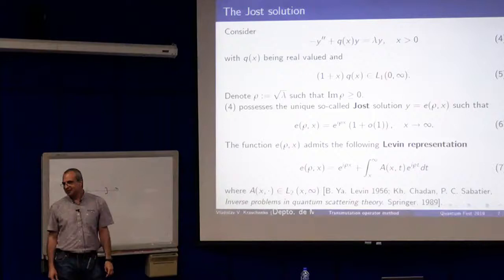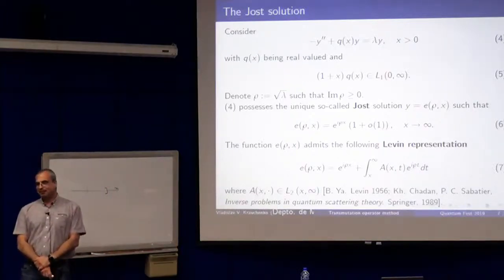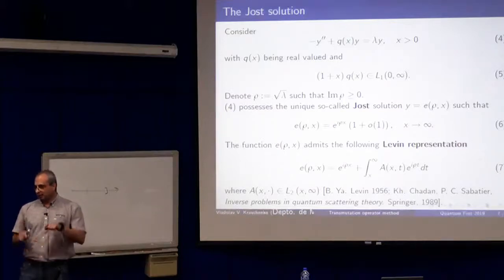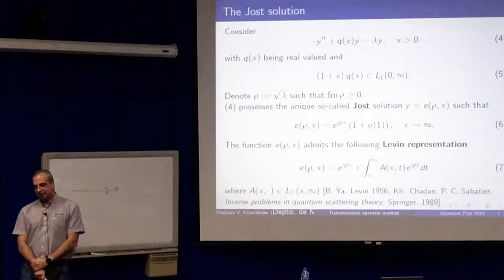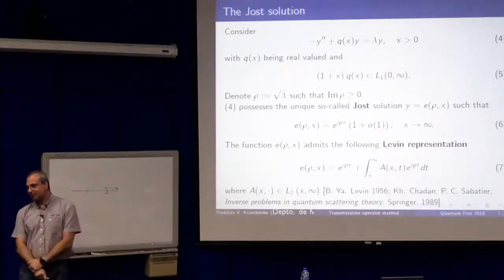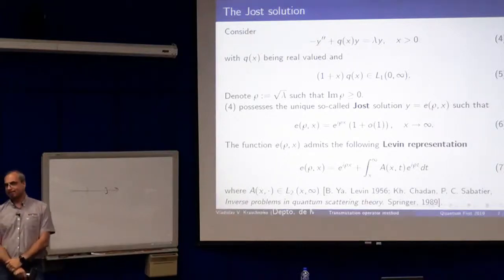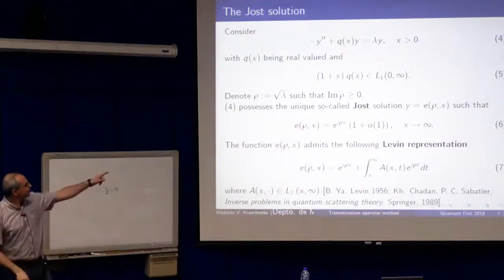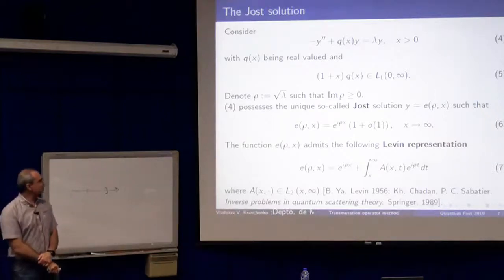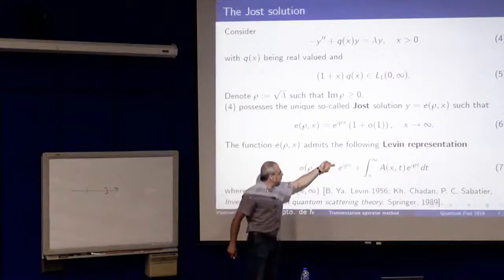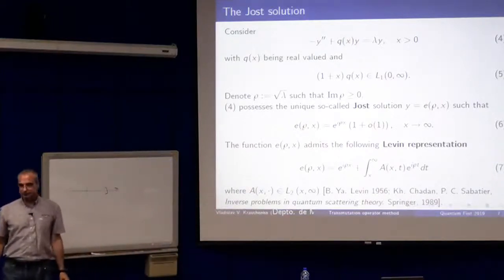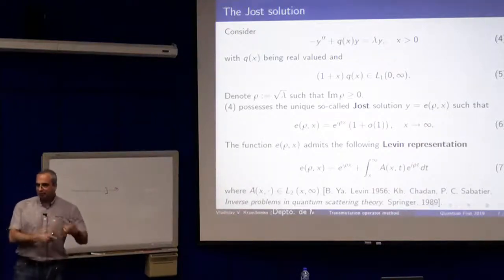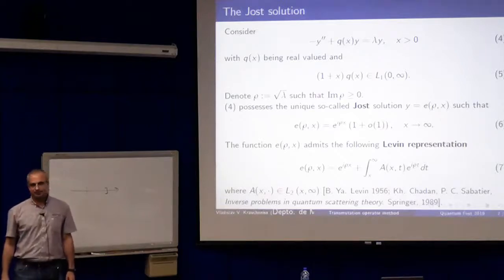Regarding the Jost solution for the inverse problem: I don't need the Jost solution for the inverse problem. For the forward problem of course I need both Jost solutions for both infinities. But this construction for one infinity works also for the other. There is also such a representation from minus infinity to x with another kernel — instead of x, you take minus x and repeat the whole procedure.